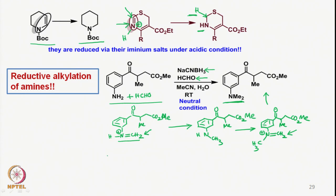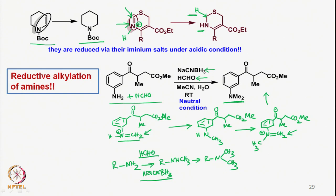So starting from R–NH2 we go stepwise to R–NH–CH3 and then to R–N(CH3)2. This is because of formaldehyde and sodium cyanoborohydride, and it is a straightforward way of introducing a dimethyl group on a primary amine using the property of sodium cyanoborohydride to reduce cationic species.